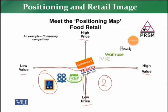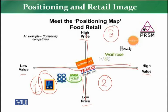In quadrant two, these are stores which offer low price and high value. If you notice practically, you have almost no store which offers both low price and high value — this scenario exists very rarely. Then we have the third quadrant, where retail stores offer high value and high price — they are offering high value to the customer but at the same time charging a high price. Examples here are Harrods, PRSM, M&S, and Waitrose.